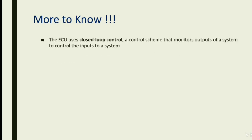The ECU uses a closed-loop control — a control scheme that monitors the output of the system and controls the input to the system, so the input is controlled automatically by the feedback of the output.